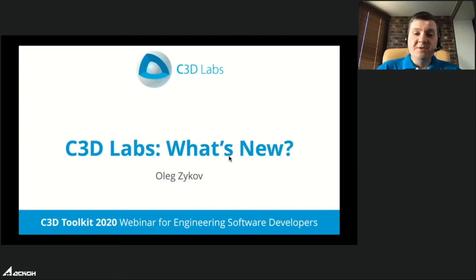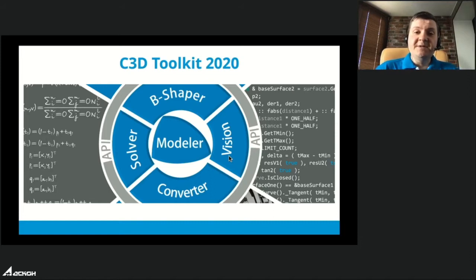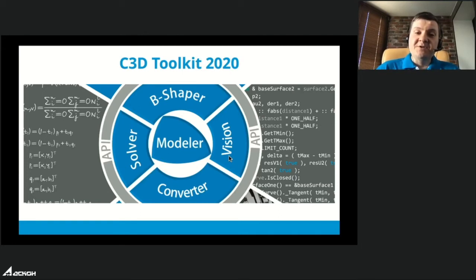I want to tell you a little bit about what's new for C3D Labs this year and last year. For those of you who are not customers of C3D, our main product is C3D Toolkit. This is the complete solution for engineering software developers, and it consists of five modules: Geometric Modeling Kernel Modeler, Data Exchange Module C3D Converter, Parametric Constraint Solver, Visualization Engine Vision, and our newest module B-Shaper.